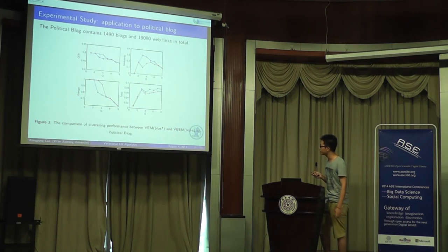We use the three criteria to compare the performance. We can see that blue is VEM and red is VBEM. From the figure, VEM performs better than VBEM. It has higher modularity and lower entropy and lower CER. The time cost is almost the same.